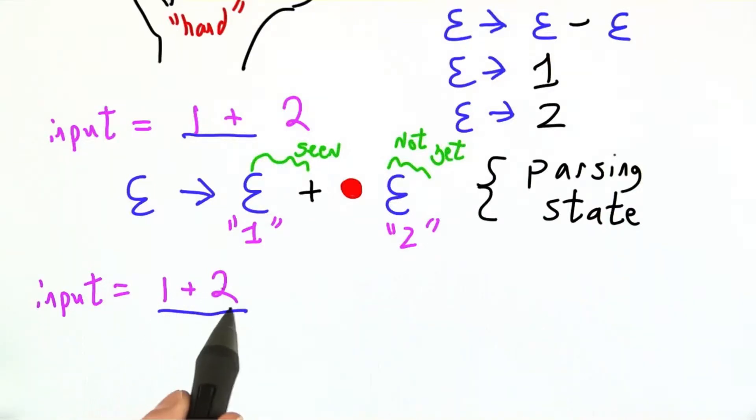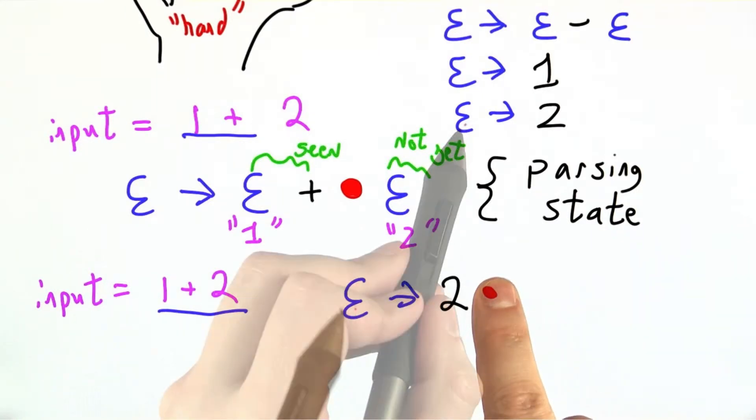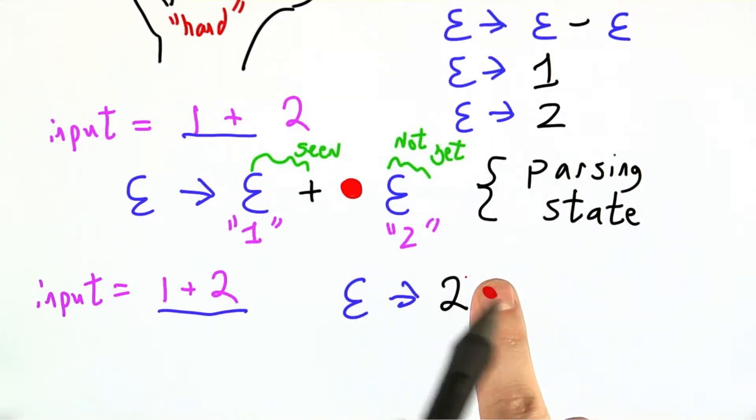Let's trace what happens as we see a little more of the input. Let's say we actually walk over and we see the 2. Well then our parsing state looks like this. e goes to 2, we've seen the 2, and there's nothing left. Everything important is in the past, there's nothing in the future.